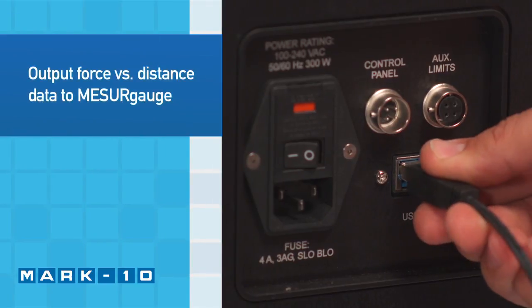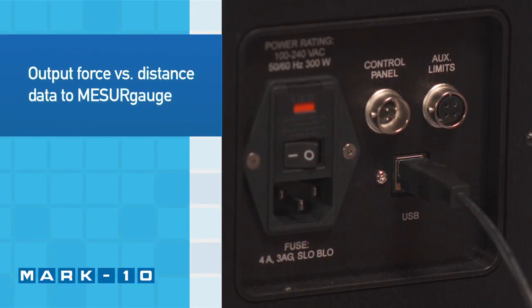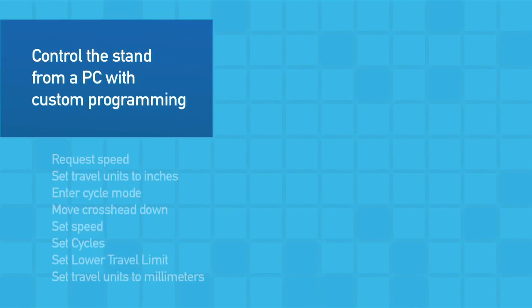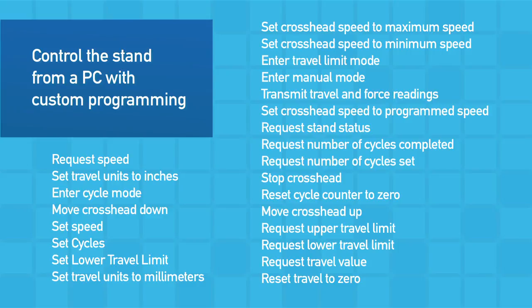Force and distance data can be output to a PC via USB for graphing and reporting. Custom applications can also be developed utilizing the ASCII command set.